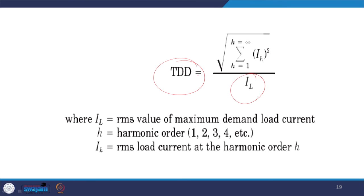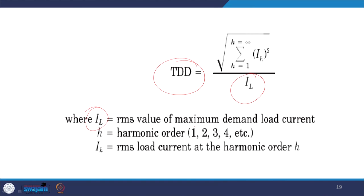TDD is basically the harmonic current divided by the demanded load current. If you are not drawing the full load current and your harmonic content is high, you cannot penalize the utility. But when you are drawing the full load current, the measurement is taken at full load. Il equals the RMS value of the maximum demand load current, and Ih is the RMS of the harmonic current excluding the fundamental.